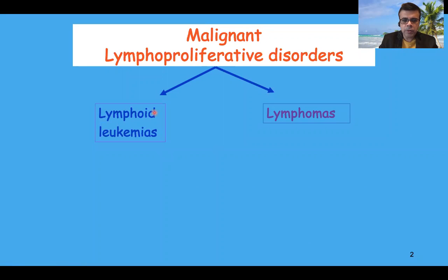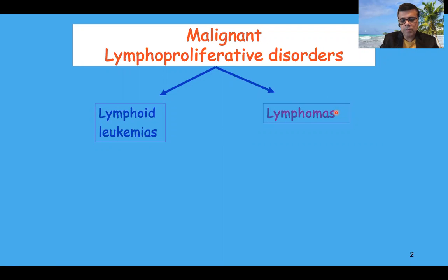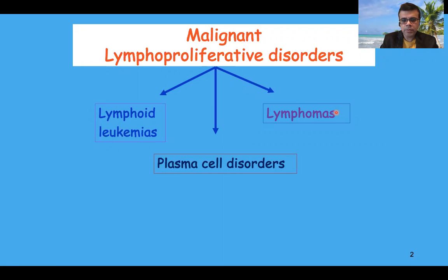Leukemias and lymphomas: when we say leukemias, it means the bone marrow has been infiltrated and may have spilled into the peripheral blood. Lymphomas, on the other hand, are mostly confined to the lymph node or some extranodal organs. Some lymphomas may ultimately turn into leukemias by involvement of bone marrow. There is another group of disorders — plasma cell disorders — that are also lymphomas and very rarely could present as leukemias as well.